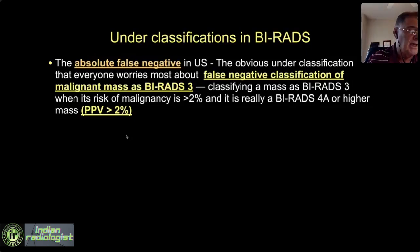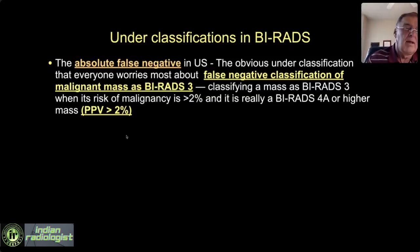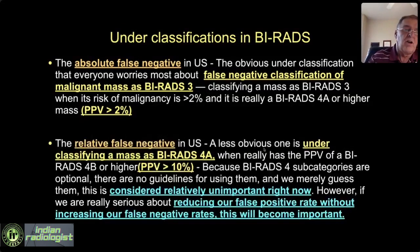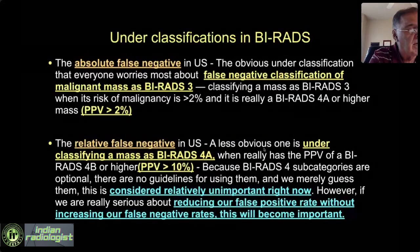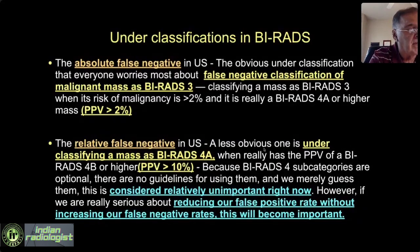When I think about false negatives, I classify them in two ways. Absolute false negatives are cases that we call BIRADS-3 and suggest the possibility of follow-up rather than biopsy that turn out to be malignant. But there are also relative false negatives — where we underclassify a lesion, calling it 4A when it's really 4B or C.